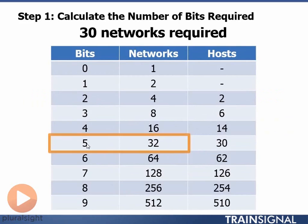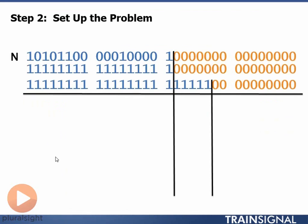So we need five bits. We're going to set up the problem. We put our given address that we received from our ISP up at the top. We put our subnet mask that our ISP gave us, which was /17, below that, and then draw a line between our network portion and host portion that was given to us. We then calculate our new mask by taking our given mask /17, adding five bits to it, and then drawing another line that represents the end of our borrowed bits section.